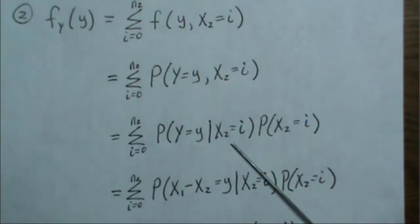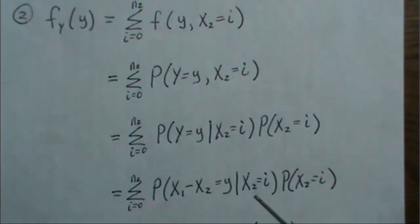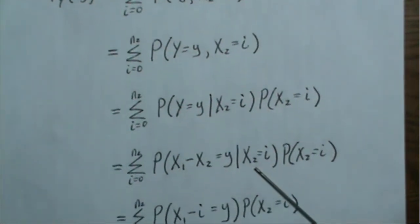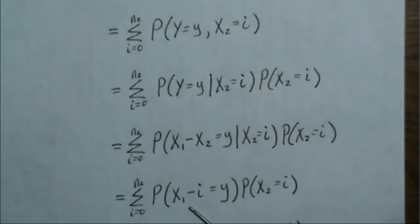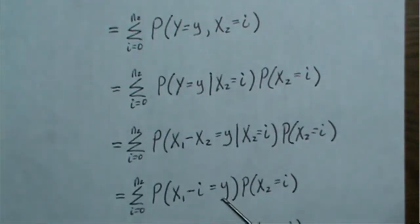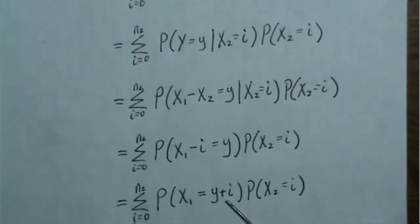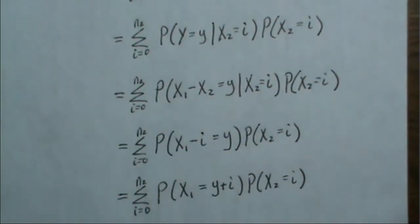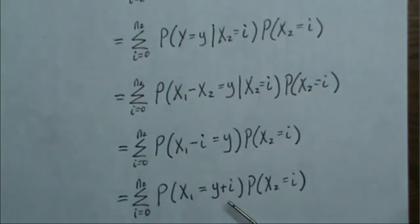Well, from here to here, I let Y be X1 minus X2. So nothing changes from here to here. But we're saying that X2 equals i. So once you set X2 equal to i, then you can take away that conditional. So it's the probability that X1 minus i equal to Y times the probability X2 is i. Well, that can be taken to the other side. So X1 equals Y plus i, we're still summing all over these values.